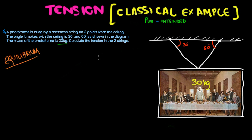In this video I'm going to be talking about one example of tension. A photo frame is hung by a master string on two points from the ceiling. The angle it makes with the ceiling is 30 degrees and 60 degrees. The mass of the photo frame is 30 kg, and we have to calculate the tension in the two strings.